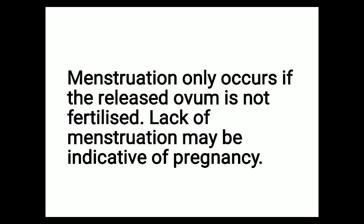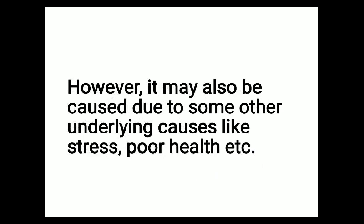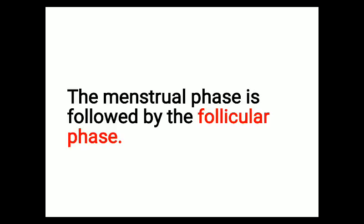Lack of menstruation may be indicative of pregnancy. Menstruation only occurs if the released ovum is not fertilized; if the ovum is fertilized by a sperm, the menstrual cycle stops. However, lack of menstruation doesn't always mean pregnancy - it may also occur due to conditions like polycystic ovary syndrome, stress, or poor health.